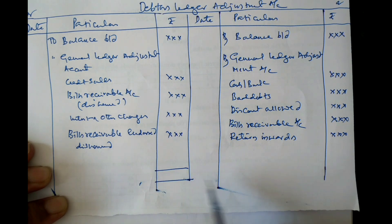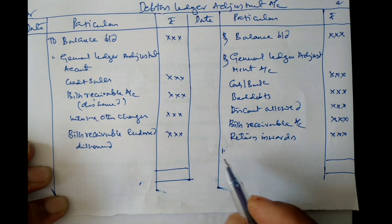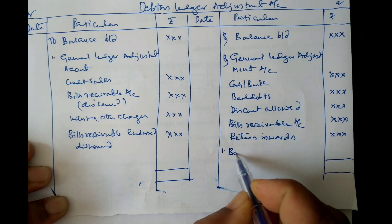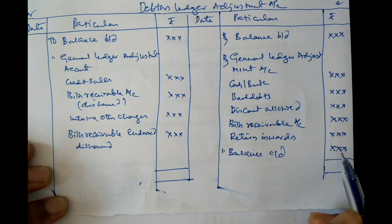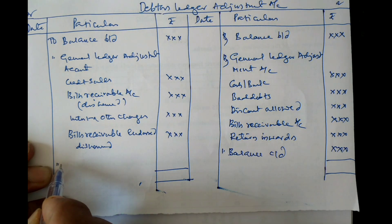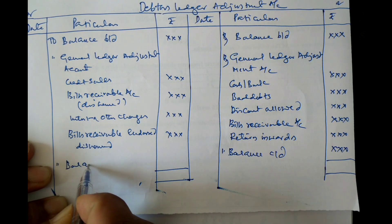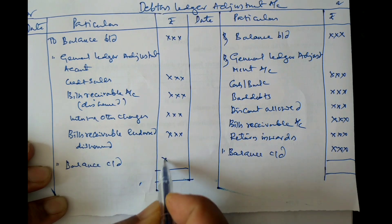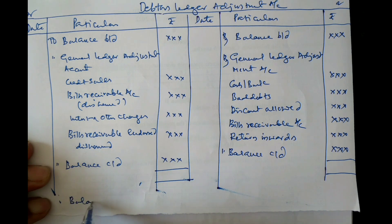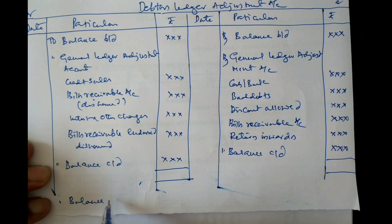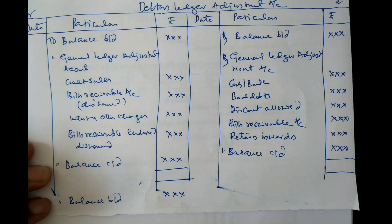After that, we must close this account by totaling the debit side and credit side. The difference may appear on the credit side as balance carried down, so that must be taken to the credit side. If there is any difference on the debit side, that will be the balance carried down taken to the debit side. The balance of the credit side is then transferred to the debit side as balance brought down. In this way, this account is prepared.